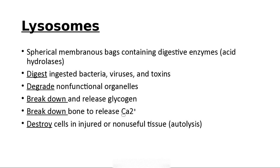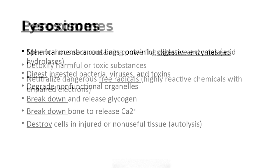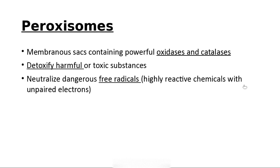Lysosomes can break down bone to release calcium, and they handle old, injured, non-useful tissue through a process called autolysis. Such as when you're an embryo — you all have a tail, and most of you don't have one now.